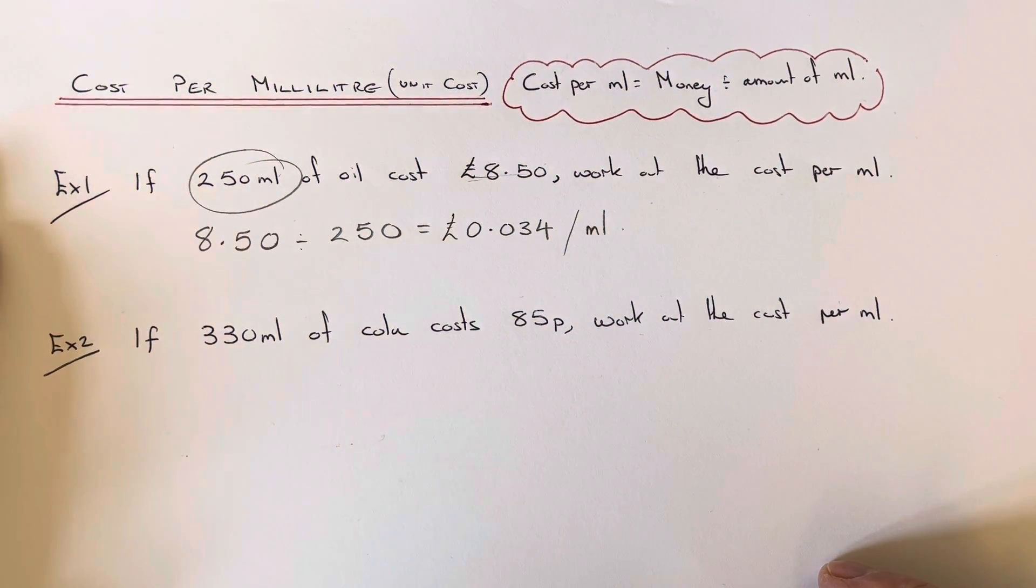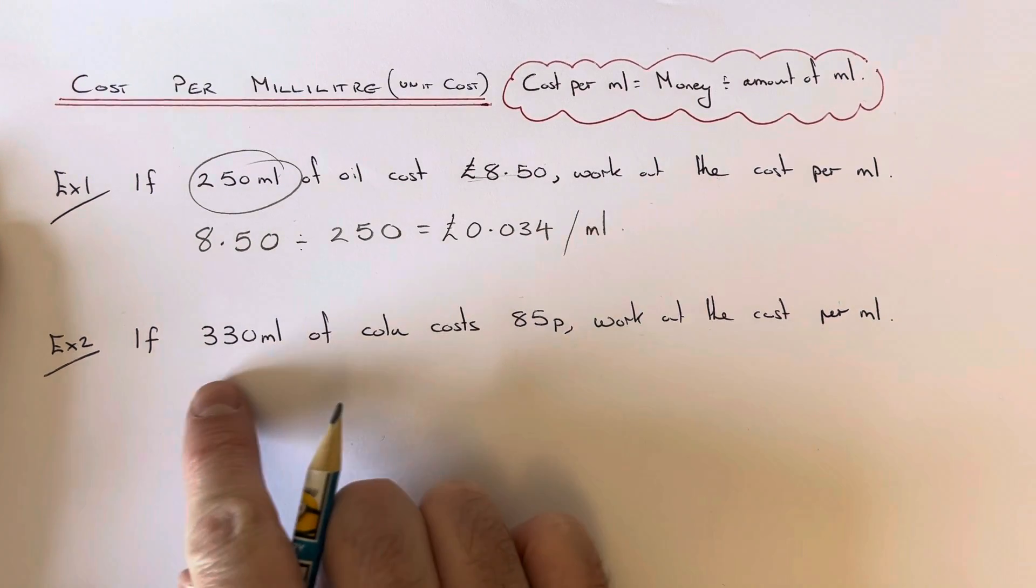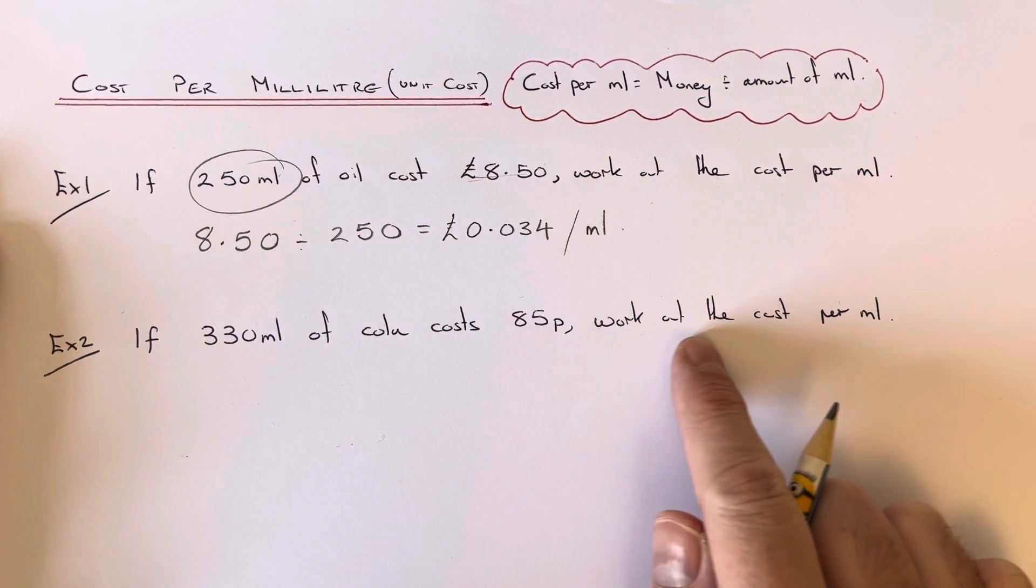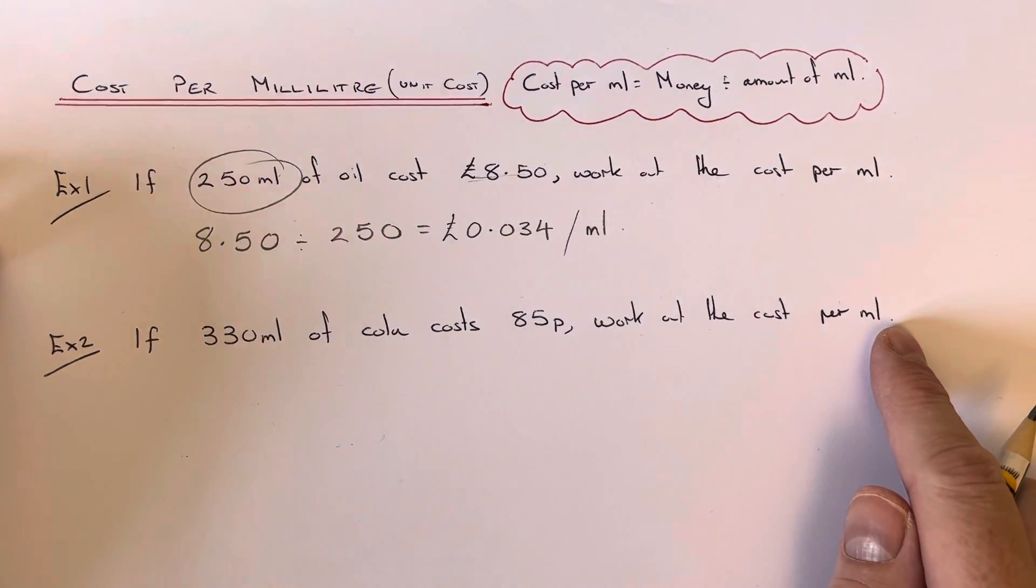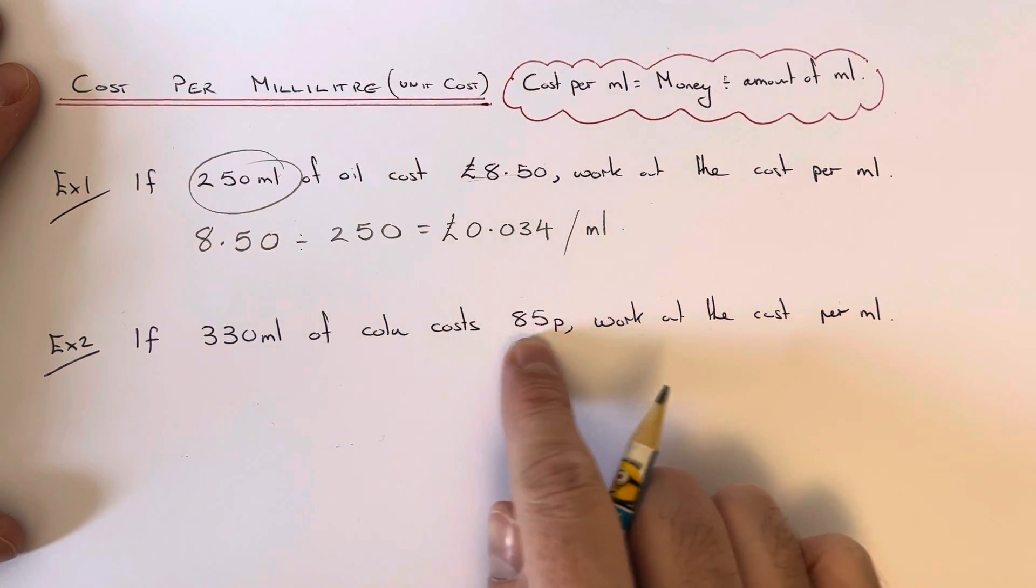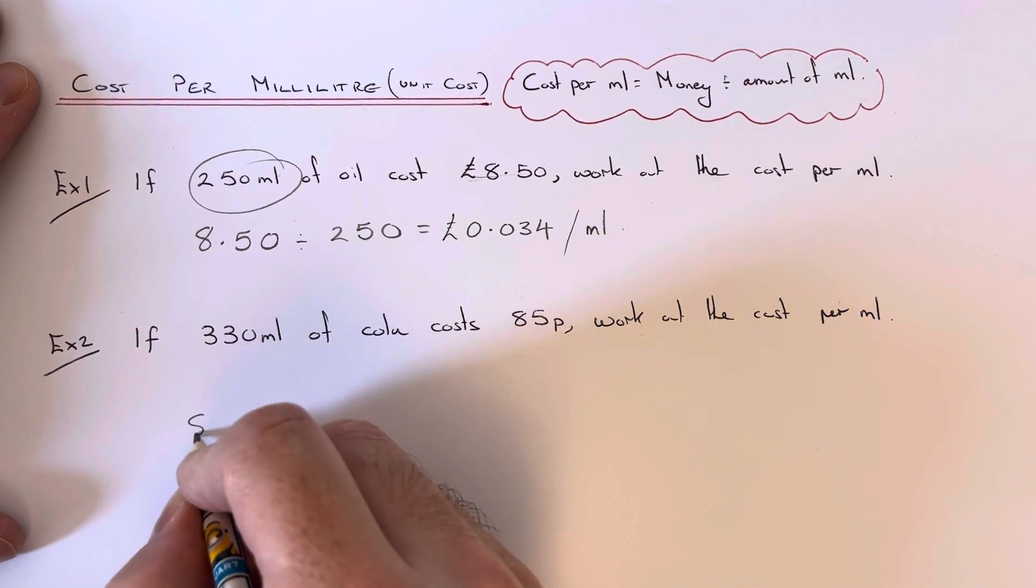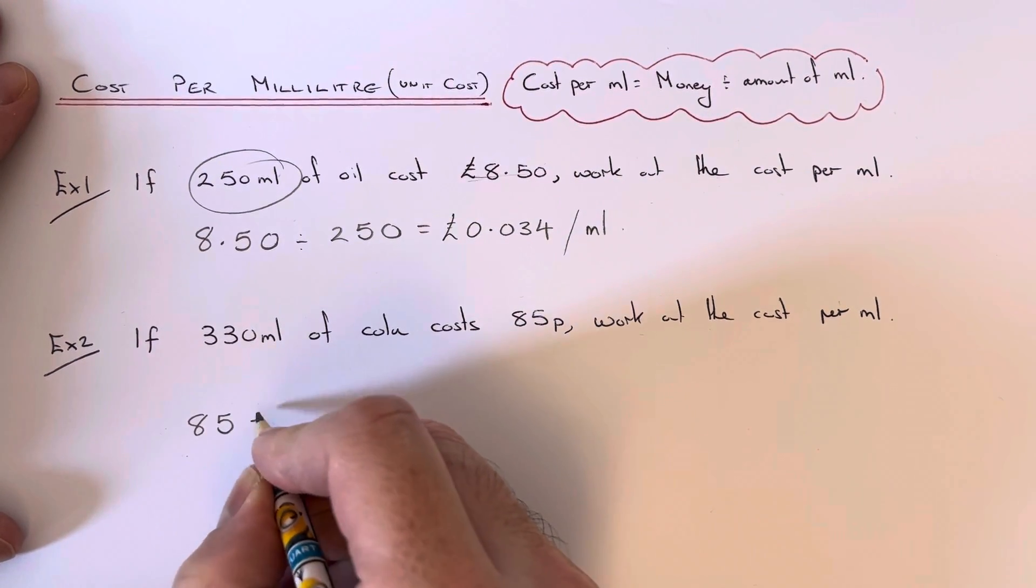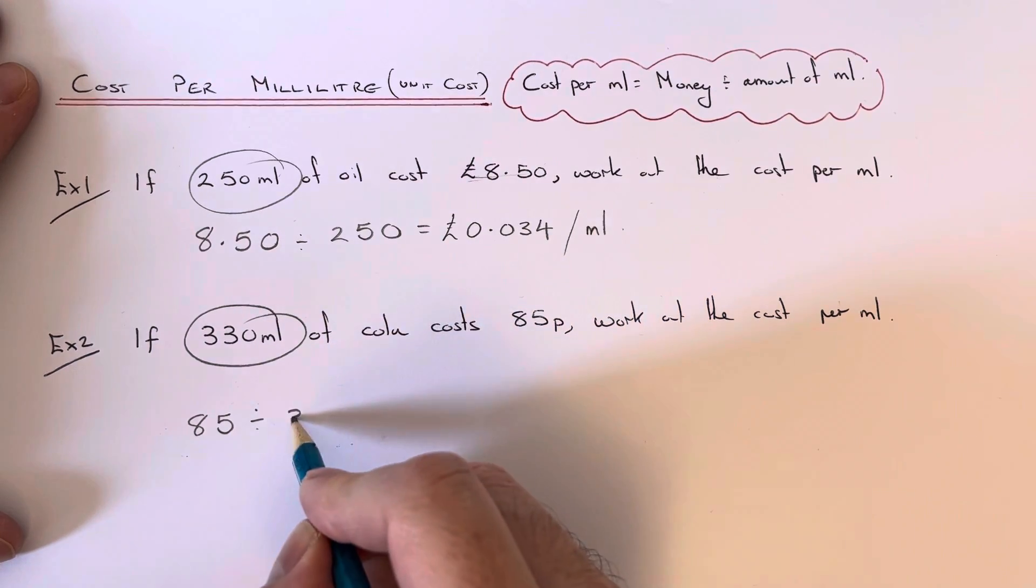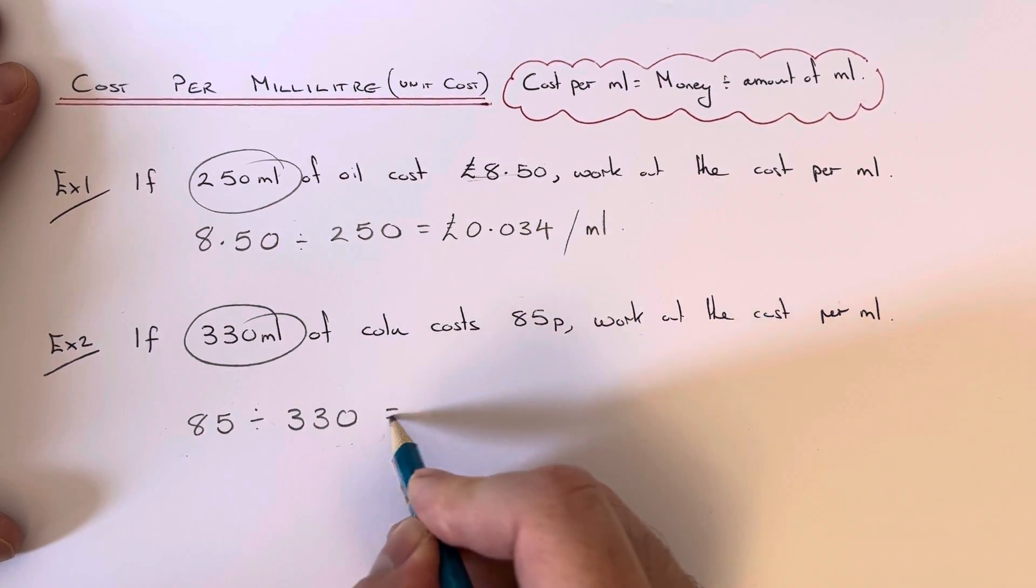Let's have a look at the second example. If 330 milliliters of cola costs 85p, work out the cost per milliliter. Again, we get our money, which is 85p, so we do 85 and we divide that by the number of milliliters we are buying, which is 330.